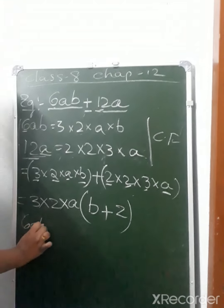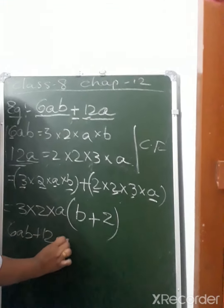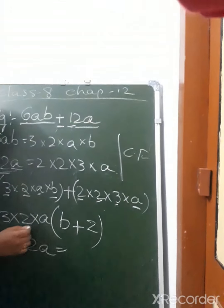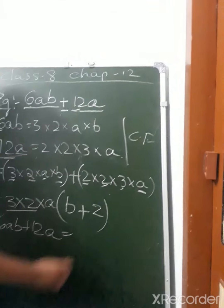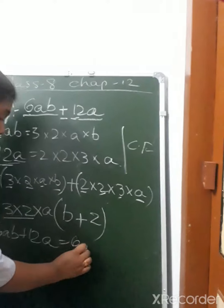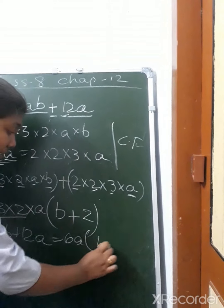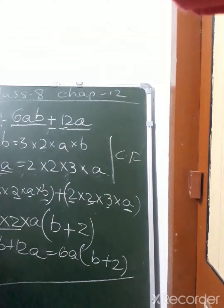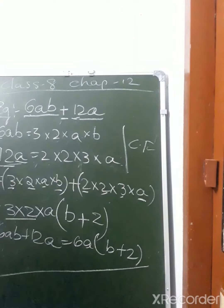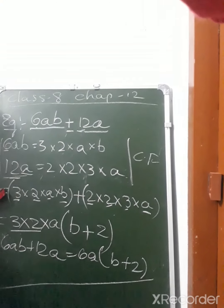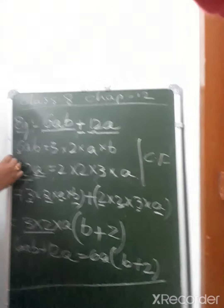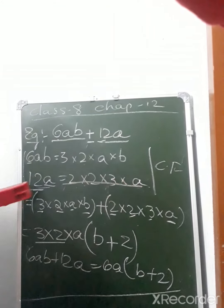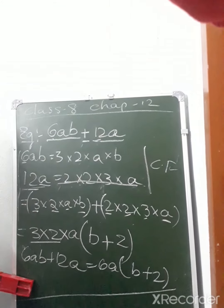Finally, 6ab plus 12a equals 6a into (b plus 2). This is the final answer. These are the common factors, and this is the factorization.